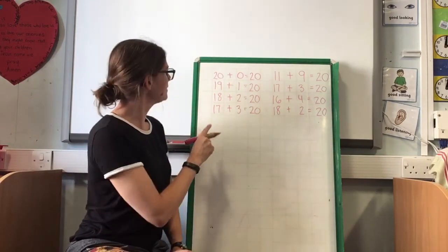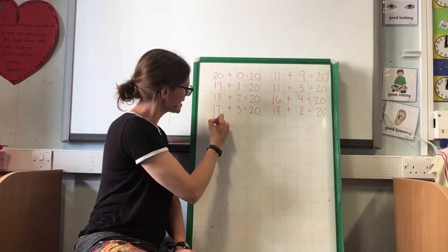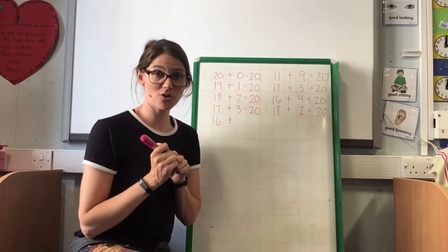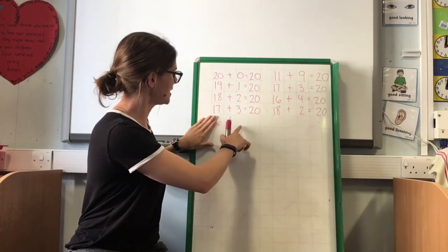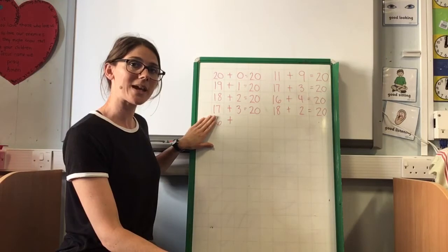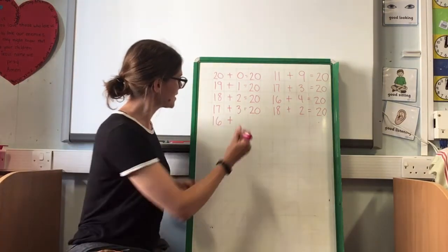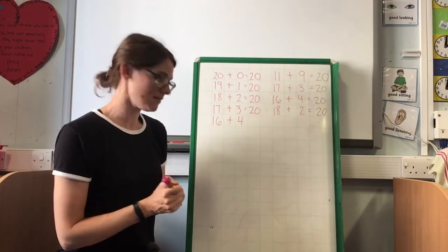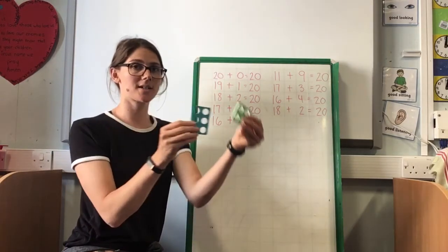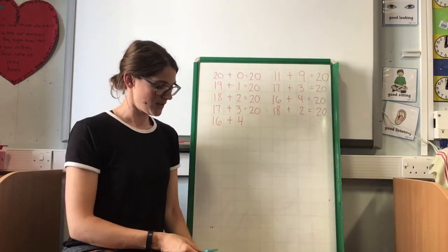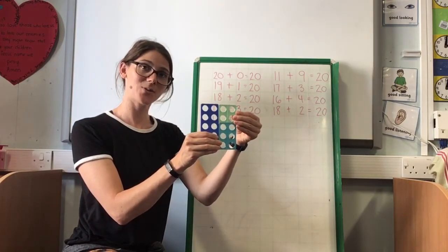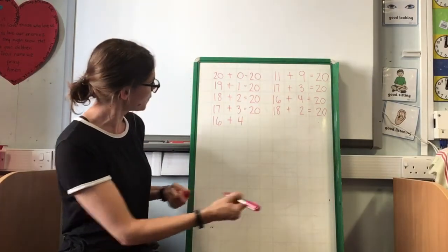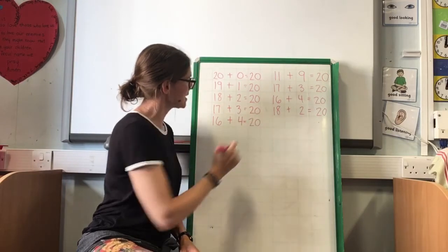I'm going to do a different trick for this one. 20, 19, 18, 17, 16. I'm not going to do the counting on trick — I'm going to do the trick where I cover up the one and say: 6 add something. What would be my bond with 6 to make 10? 6 and 4. So if 6 and 4 make 10, then 16 and 4 should make 20. I've checked it with my Numicon — that's right. 16 and 4 equals 20.